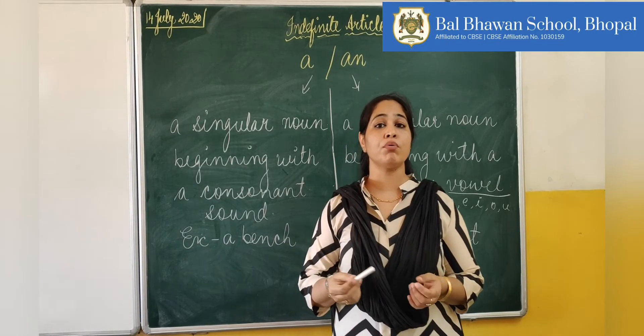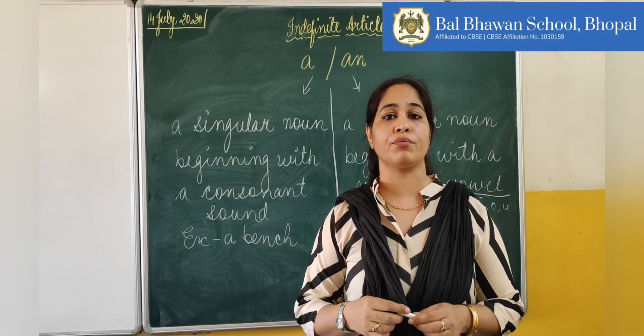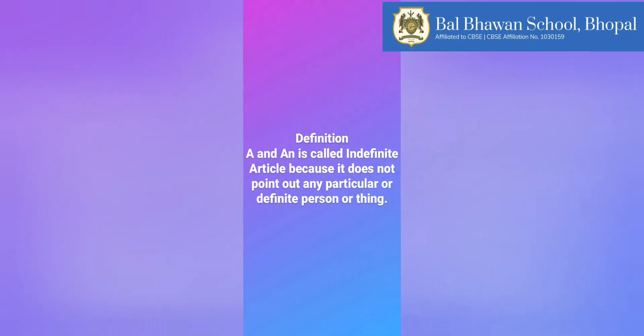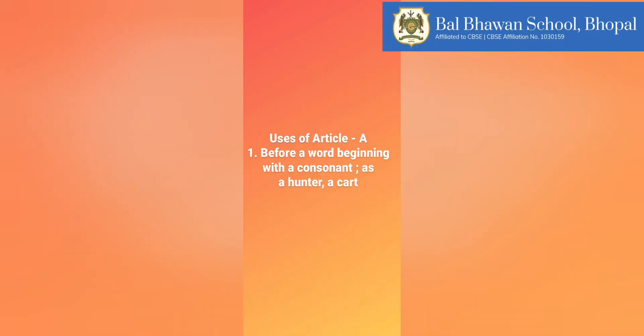Now we are going to learn more uses and rules of using these articles. Let us revise the definition of 'a' or 'an'. A or an is called an indefinite article because it does not point out any particular or definite person or thing. For example, I saw a hunter riding on an elephant. As a general rule, the common noun in the singular number must have an article before it.